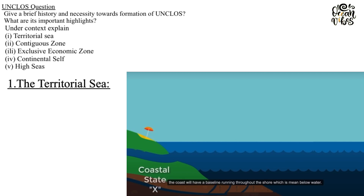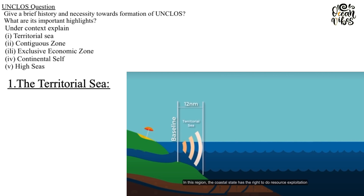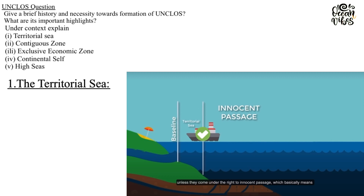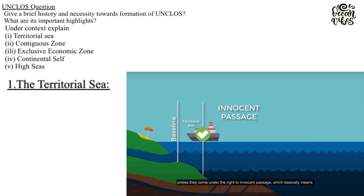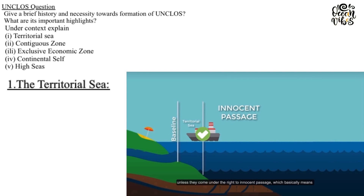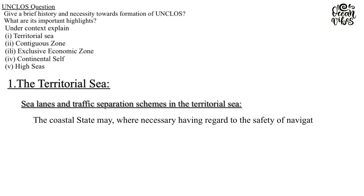Territorial Sea: The sovereignty of a coastal state extends to an adjacent belt of sea described as the territorial sea. The breadth of the territorial sea is up to a limit not exceeding 12 nautical miles measured from baselines. Right of Innocent Passage: Ships of all states, whether coastal or landlocked, enjoy the right of innocent passage through the territorial sea. Passage shall be continuous and expeditious; however, it includes stopping and anchoring only in so far as incidental to ordinary navigation, or rendered necessary by force majeure, distress, or for rendering assistance to persons, ships, or aircraft in danger. Passage is innocent so long as it is not prejudicial to the peace, good order, or security of the coastal state.